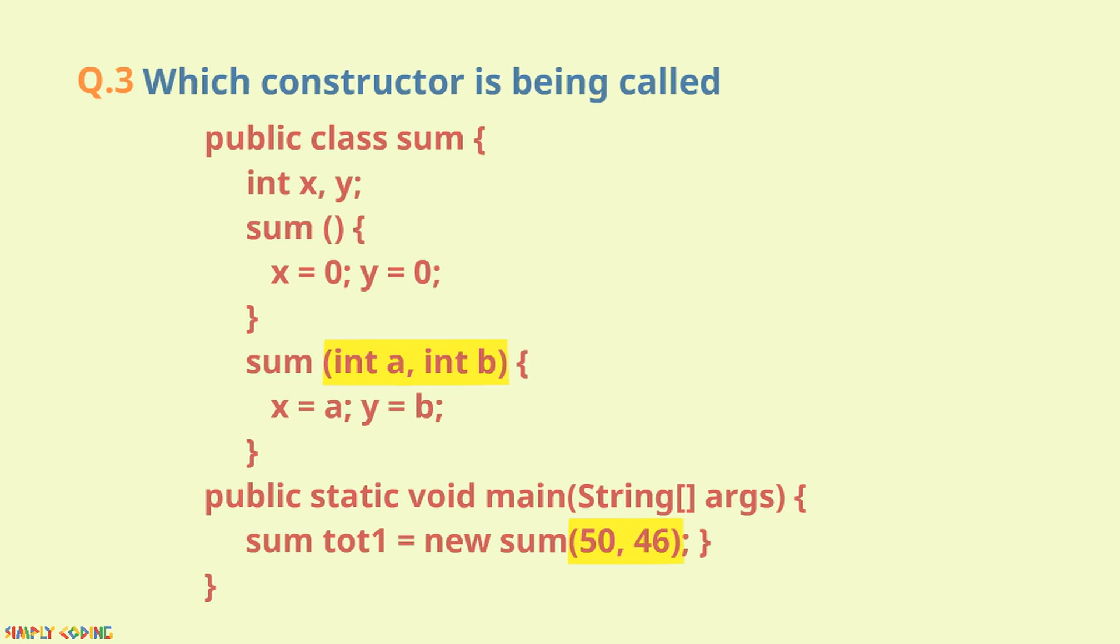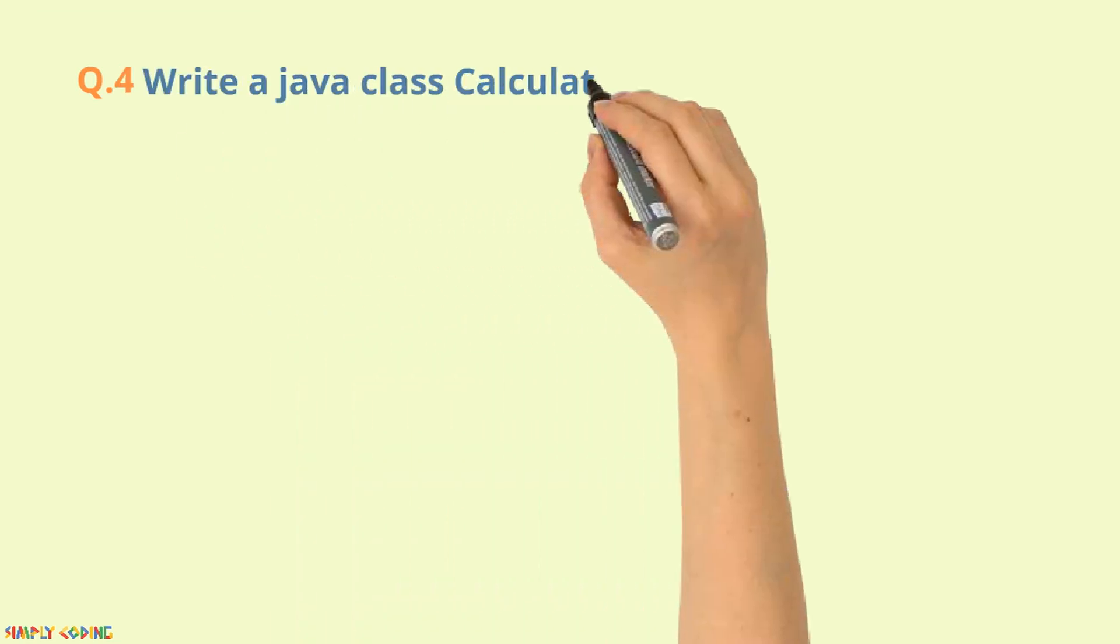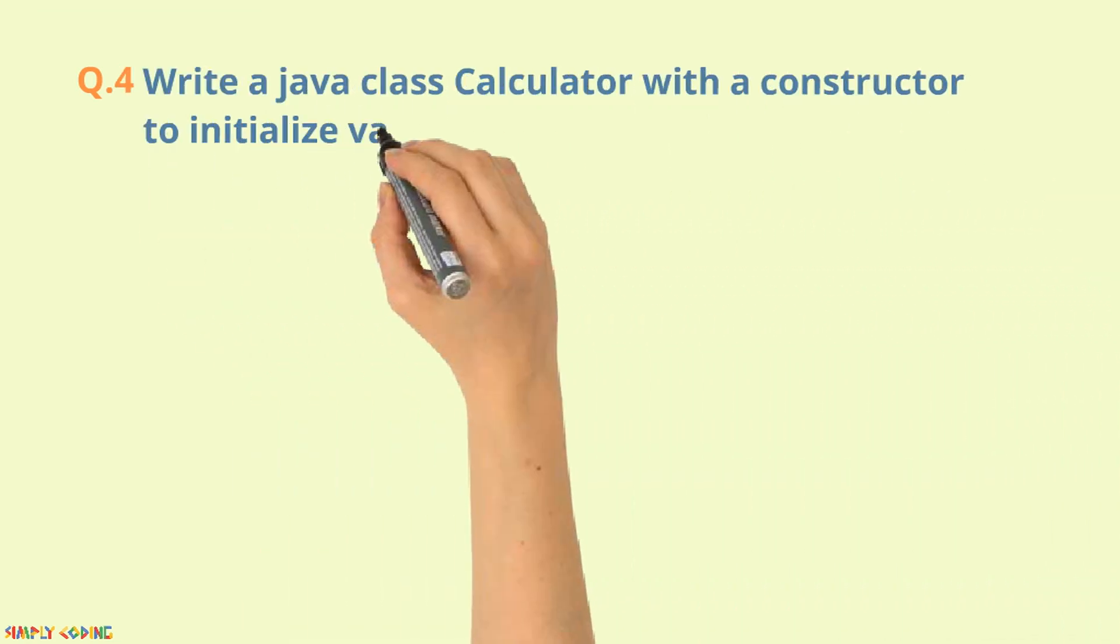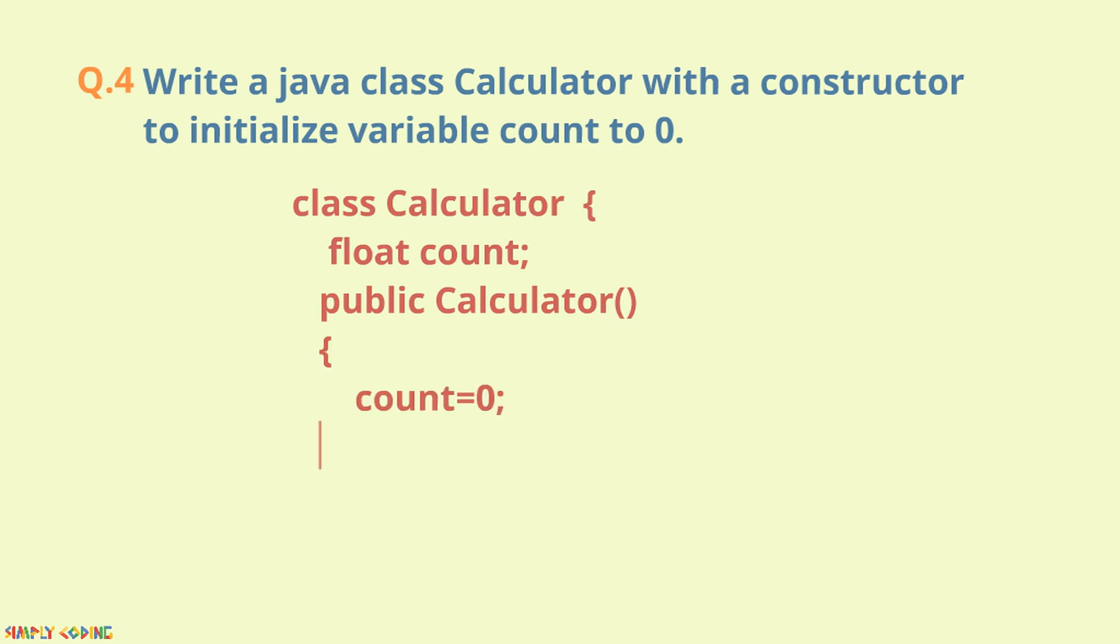Second type of question is where you are asked to write a code. Example, write a Java class calculator with a constructor to initialize variable count to zero. Here, we would write a class with a default constructor and initialize the variables.